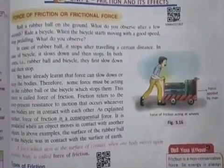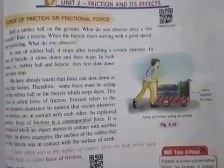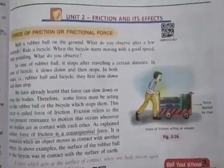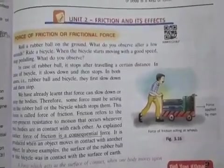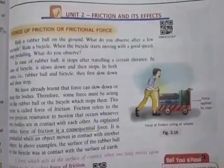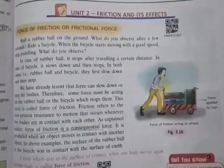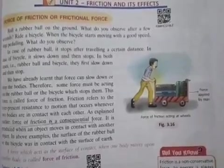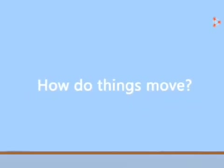Good morning, dear students. Today we'll discuss Unit 2: Friction and Effects. What is friction? How does a body come to a stop when friction acts on it? How do things move in real life? Say a ball is moving on flat ground and there's no external force acting on it. Will the ball eventually come to a halt? Yes, it will. Have you ever wondered why?